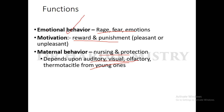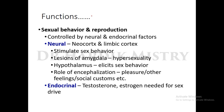Sexual behavior and reproduction are controlled by neural and endocrine factors. The neural aspects involve the neocortex and limbic cortex stimulating sex behavior. Lesions of the amygdala result in hypersexuality. The hypothalamus contains a center that elicits sex behavior. Civilization factors such as pleasure, feelings, and social customs also play a role. Endocrine hormones — testosterone and estrogen — are needed for sex drive.